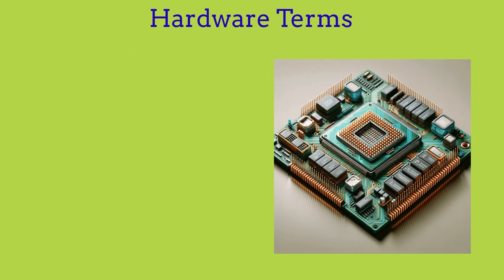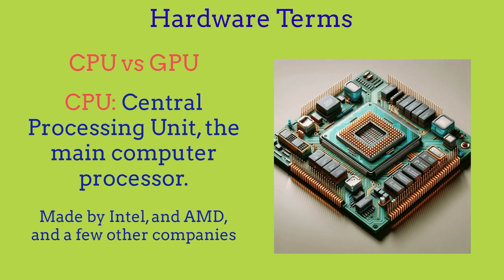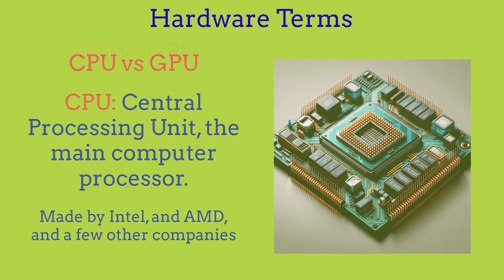Now we're going to cover hardware terms. There are two different main hardware components inside of your computer: the CPU versus the GPU. The CPU is called the central processing unit and it's the main computer processor — everything gets run through your CPU. CPUs are usually made by Intel and AMD, which seem to be the most popular companies to get a CPU from.